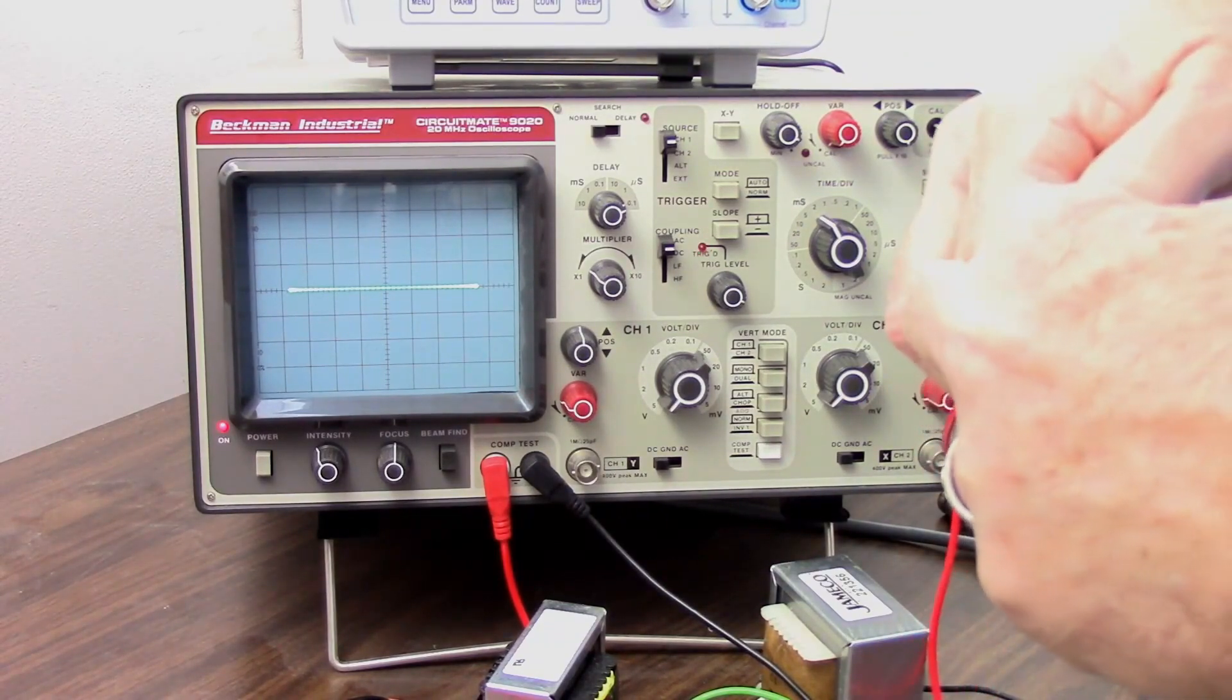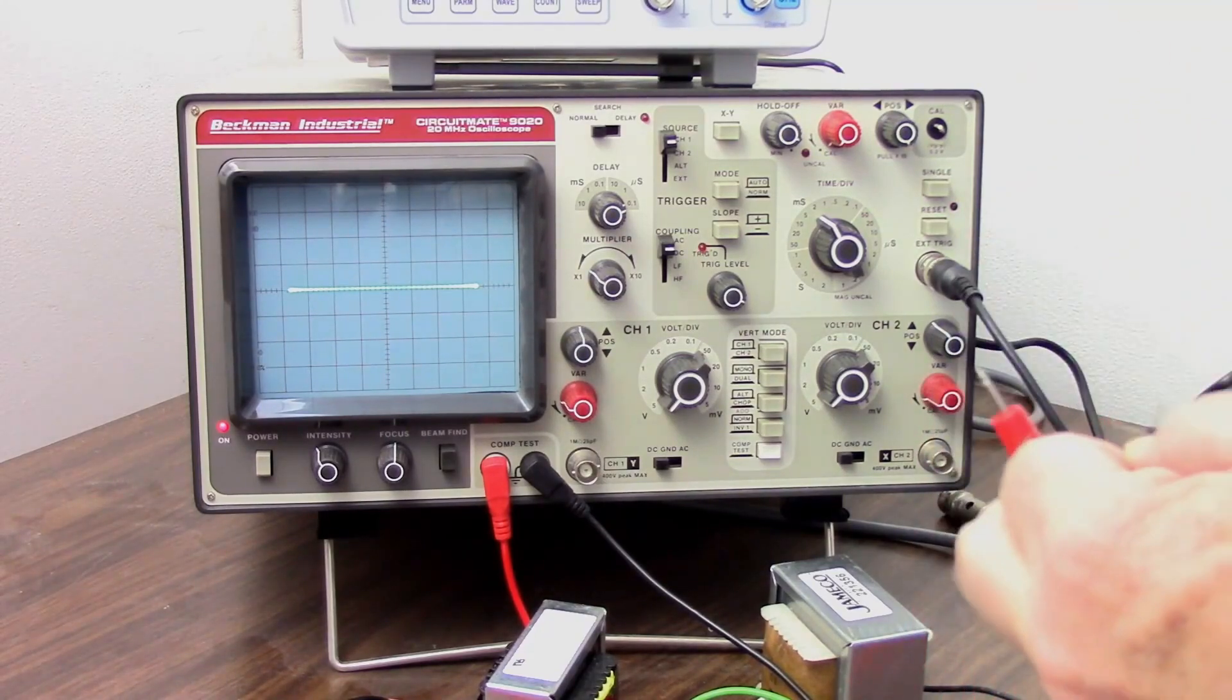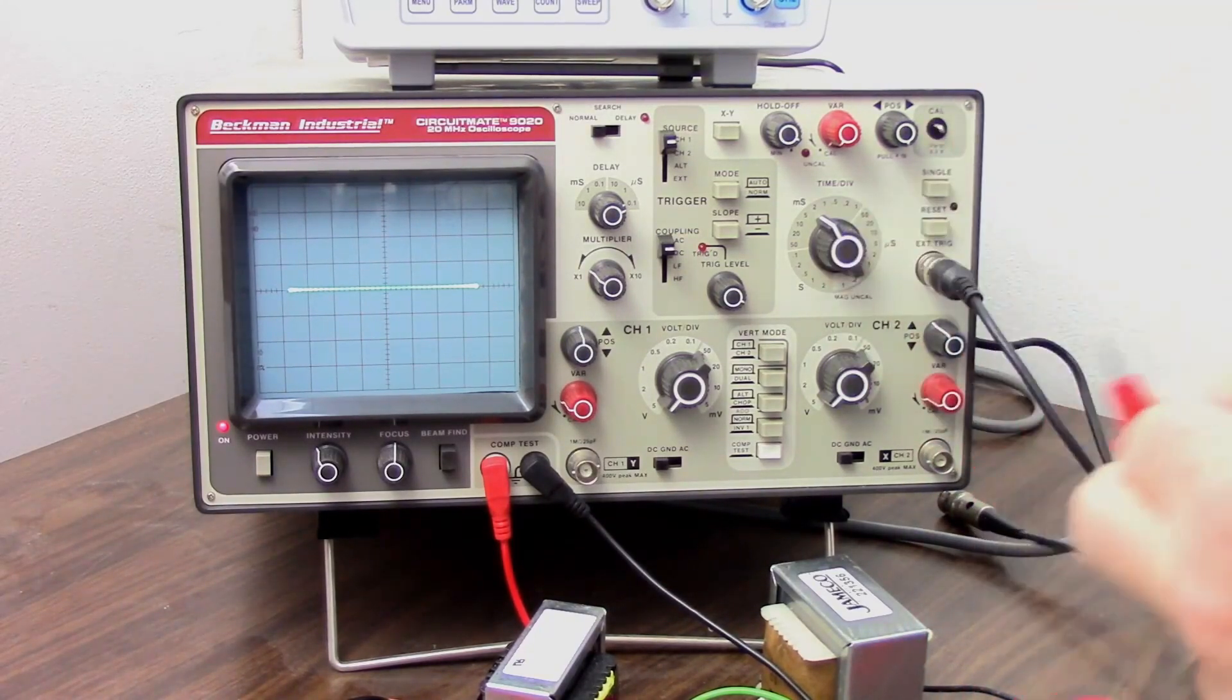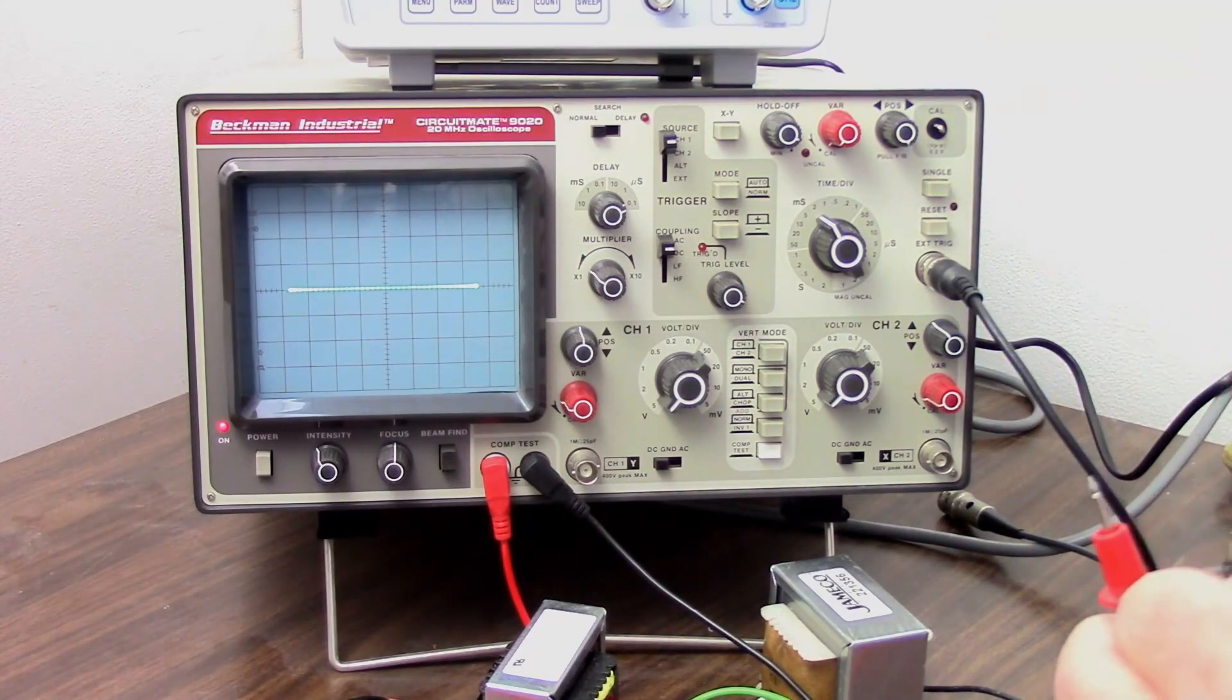So that gives us a look at a component. We can do a quick component test and see if that diode looks like a diode, or if that transistor looks like a transistor.